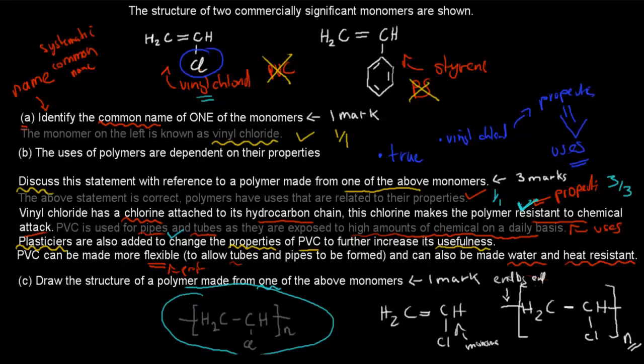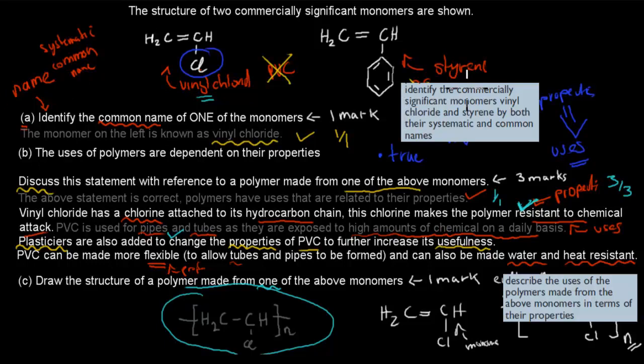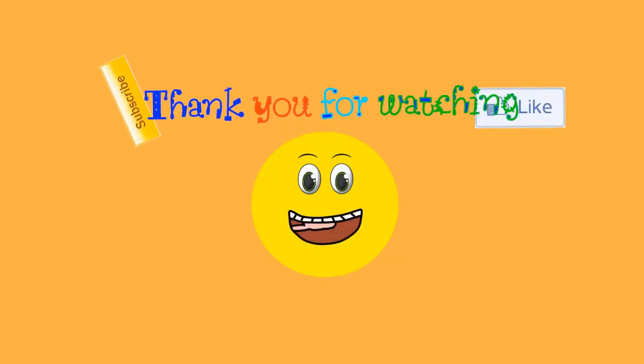And where does this question come from? They come from these syllabus points. So identify the commercially significant monomers of vinyl chloride and styrene, both their systematic and common name. The question here, the first one, identify the common name of one of the monomers. They didn't ask us for the systematic name. It doesn't matter. They just asked us for the common name. But that's where this question came from. And the other one was, describe the uses of polymers made from the above monomers in terms of their properties. So here the uses, we had to discuss the uses in the questions and how they relate to the properties. And that came from that syllabus point. So hopefully this video was useful. Thank you for watching.